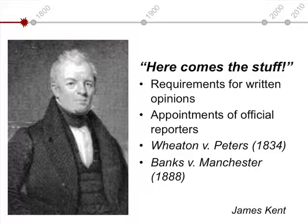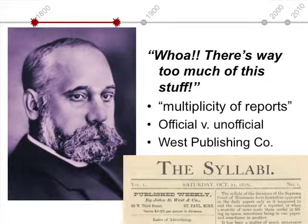James Kent began the practice of written reports when he came to the bench in New York State. By 1824, there were about 200 published volumes of reports. Wheaton v. Peters in 1834 established that U.S. Supreme Court opinions could not be copyrighted. Banks v. Manchester in 1888 was the last of a series of cases that seemed to put to rest questions about copyright and state court opinions. What these decisions did was make it possible for commercial and other unofficial publishers to get into the business of publishing court opinions alongside the official reporters for the states. After the Civil War, courts issued increasingly larger numbers of opinions, and concerns about the multiplicity of reports were expressed at ABA meetings throughout the latter quarter of the 19th century.